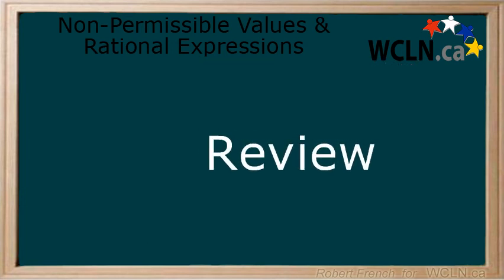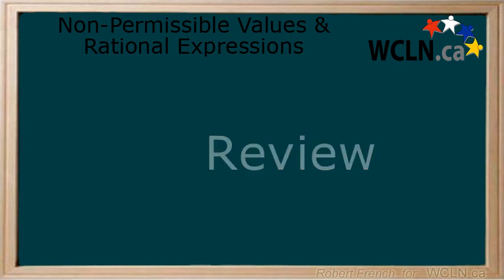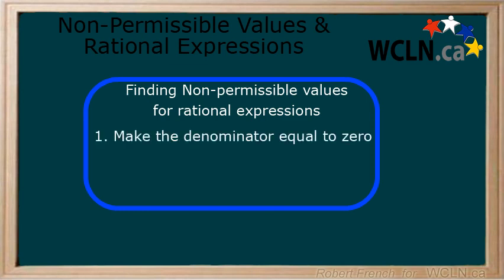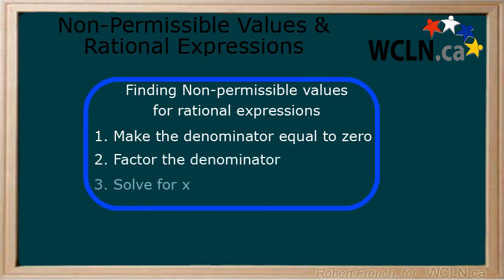In this lesson, you learned how to find the non-permissible values of a rational expression by factoring. Non-permissible values occur when the denominator of a rational expression equals 0. You find these values by factoring the denominator and solving for the value or values of x. It is very helpful to remember and be comfortable with the different factoring methods in order to determine the non-permissible values.